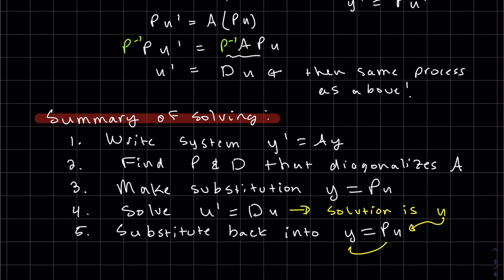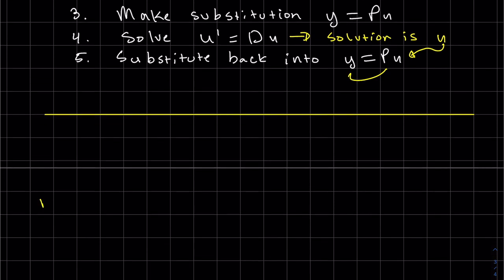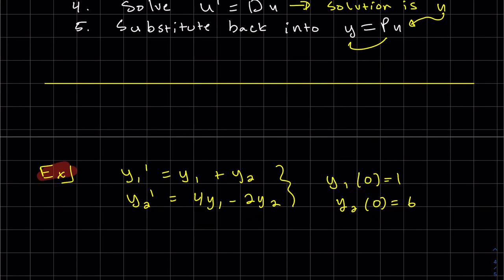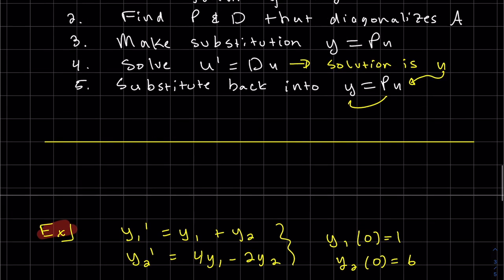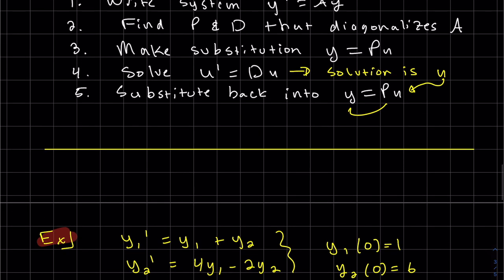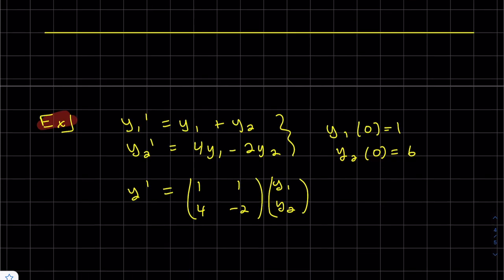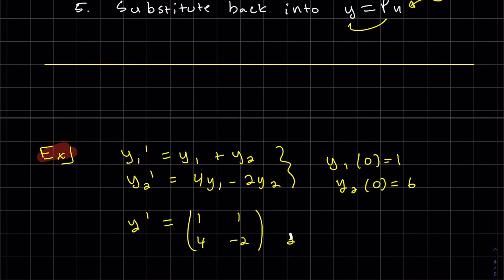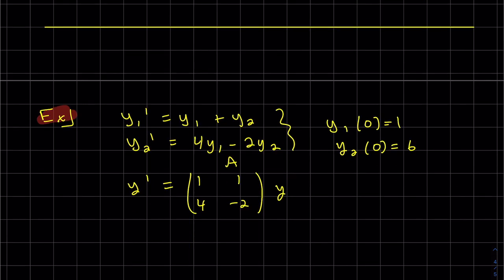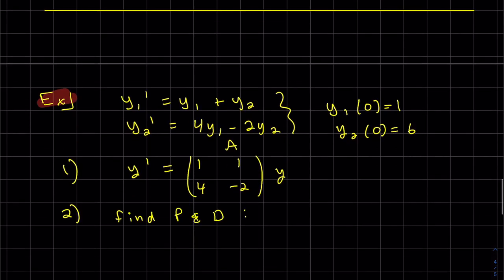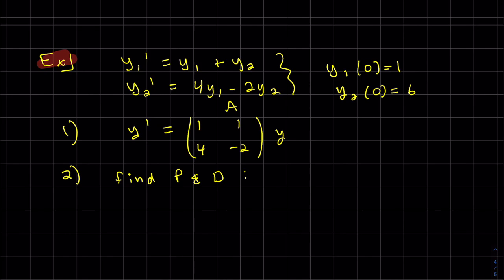Okay, let's do an example. Here's a system of equations with two initial values. So let's write it in that form, y prime equals A y. There's my A. So find the eigenvalues and eigenvectors is what we've got to find.